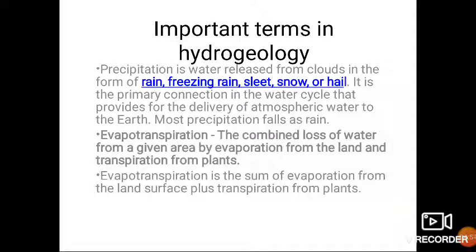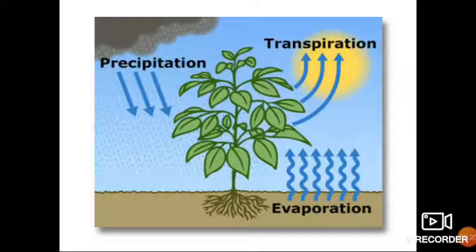The second term is evapotranspiration, meaning evaporation plus transpiration. It is the combined loss of water from a given area by evaporation from the land and transpiration from plants. When studying evaporation losses from a particular area, we must consider the loss of water both in the form of evaporation and transpiration. It is the sum of evaporation from the land surface plus transpiration from plants.